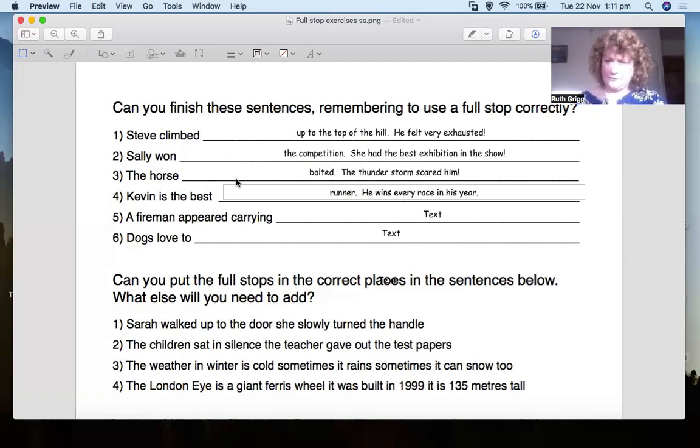I'm going to put the cat. There you go. Kevin is the best runner. So explain what this is about. It's about Kevin. What's he best at? Being a runner. Full stop. He wins every race in his year.